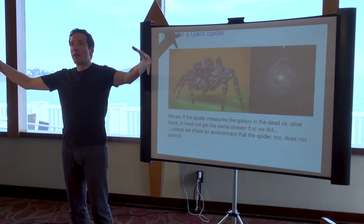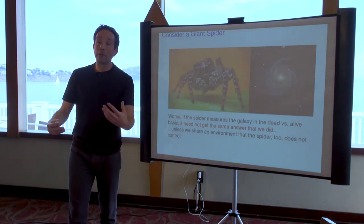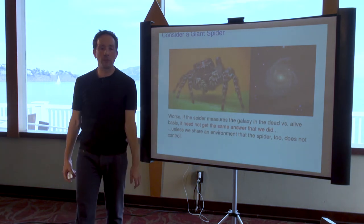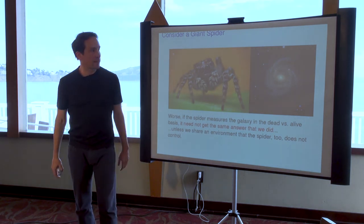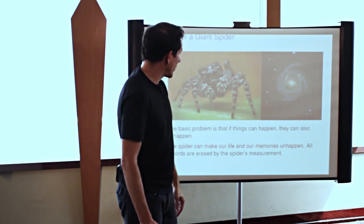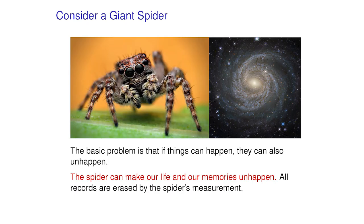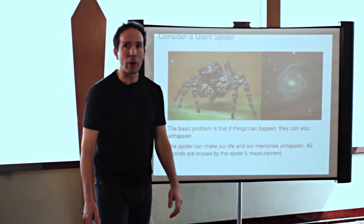But if this spider literally doesn't let anything escape from the galaxy and performs a careful measurement in what a physicist would call the basis of cat alive, rest of the galaxy happy, and cat dead, rest of the galaxy sad, the spider could have a different outcome from the one that we found. There's no contradiction here because that measurement really accesses all of the degrees of freedom, all of the particles that exist in the galaxy, all at the same time. It's a very radical and intrusive measurement that effectively can erase all the records that we have and all our memories, which are just special cases of records, of outcomes, of experiments.